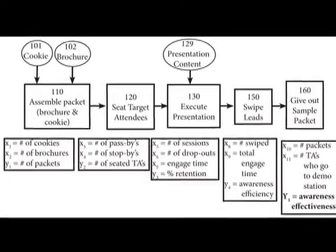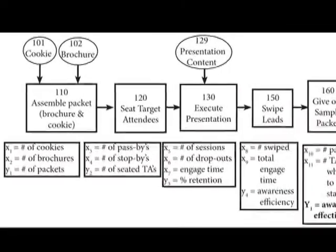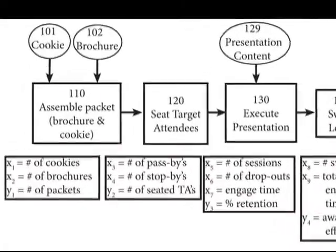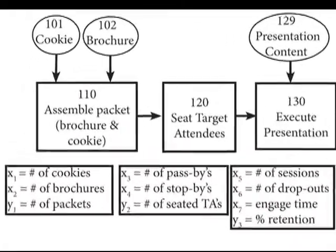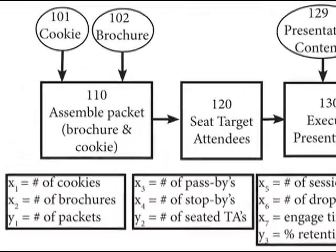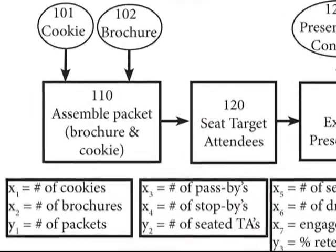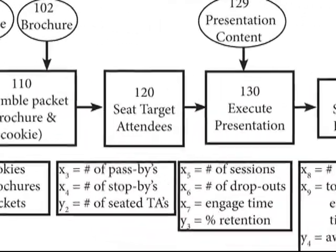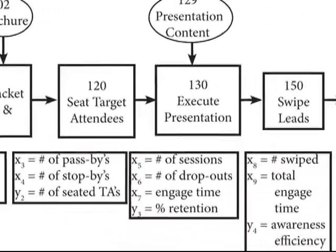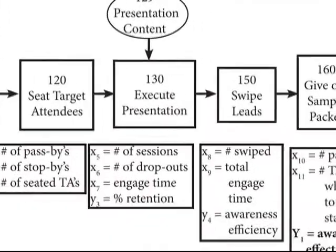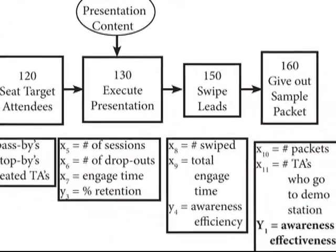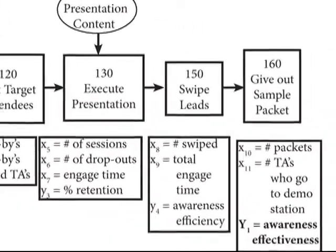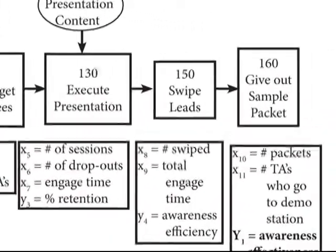Failure Modes and Effects Analysis, or FMEA, is a tool set that allows exhibitors to look at the design elements of a process, compare them against the potential ways that the elements could fail to deliver value, and rate them. Items are rated on three criteria.